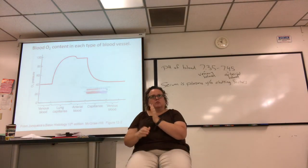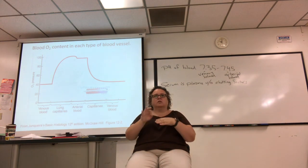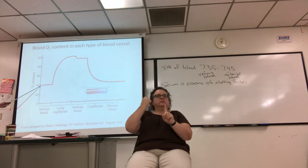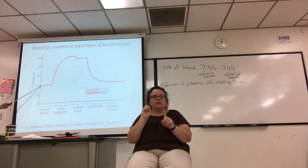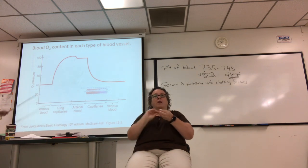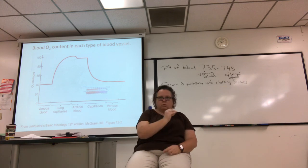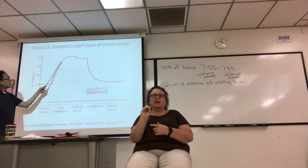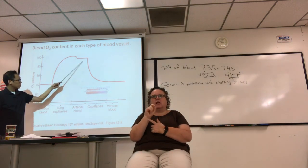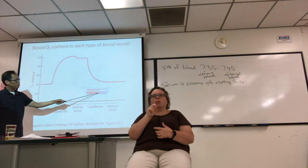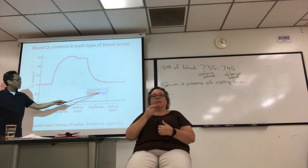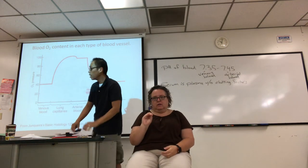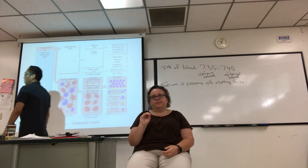Let me show you the main function here: transport O2. Look at the oxygen tension here. Deoxygenated blood is about 40 mmHg — it's not zero, it's deoxygenated. It gets close to 100 in the pulmonary circulation and arterial blood. When you have capillary exchange, it drops back down to 40.